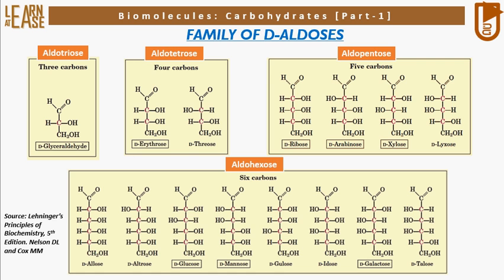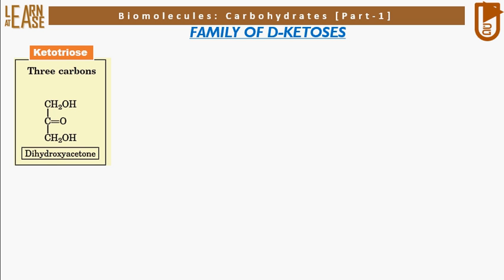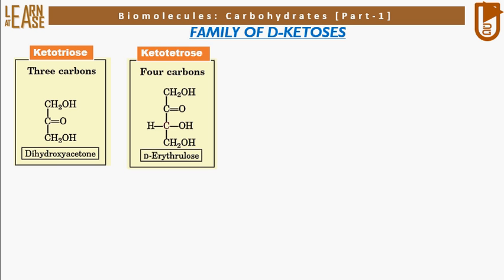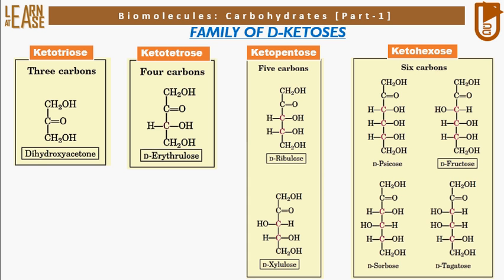Similarly, let me show structures of some commonly found monosaccharides in the family of D-ketoses. The three-carbon ketotriose is dihydroxyacetone. The four-carbon ketotriose is erythrulose. Five-carbon ketopentoses include ribulose and xylulose. Six-carbon ketohexoses include psicose, fructose, sorbose, and tagatose. In the image, all monosaccharides are represented in D-isomeric form.